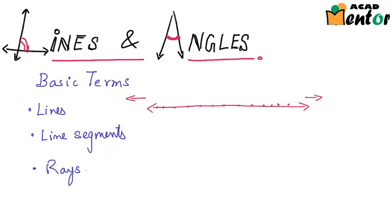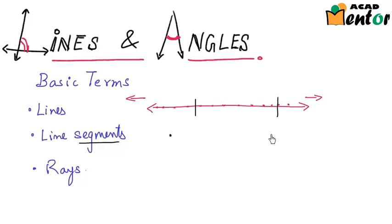Now what is a line segment? A line segment is nothing but a small part of a particular line. If I cut out a small segment from this line, that would be known as a line segment. The special thing about a line segment is that it has two fixed end points. It cannot be extended on any side.